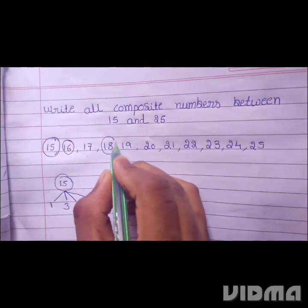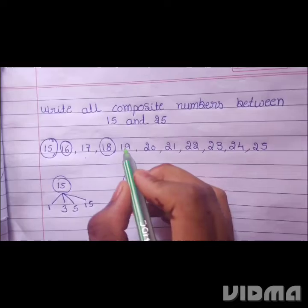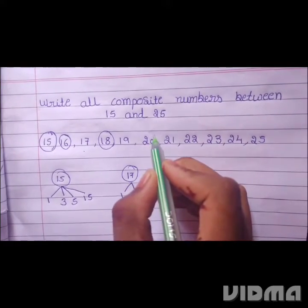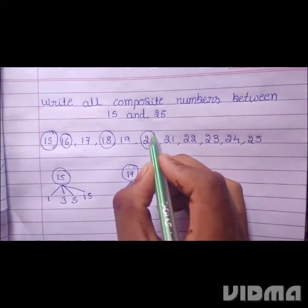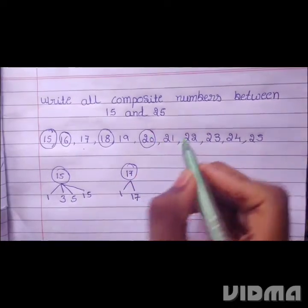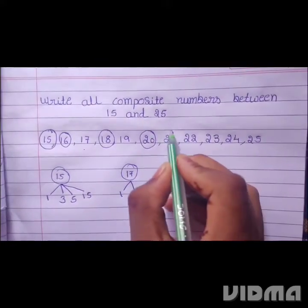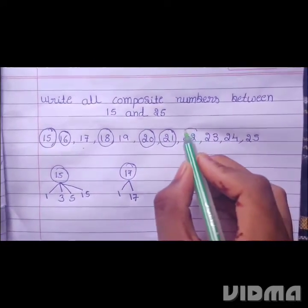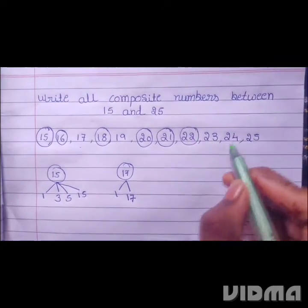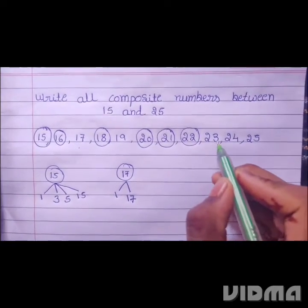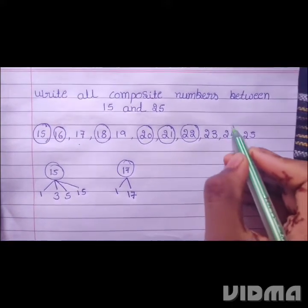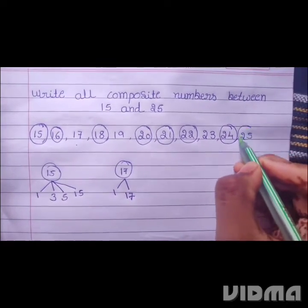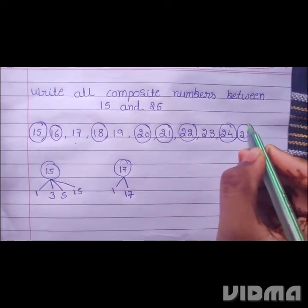18 is a composite number. 19 is a prime number. 20 is a composite number. 21 is a composite number. 22 is a composite number. 23 is a prime number. 24 is a composite number. And 25 is a composite number.